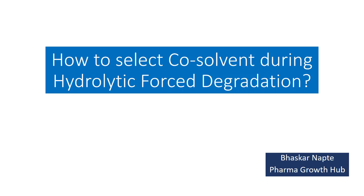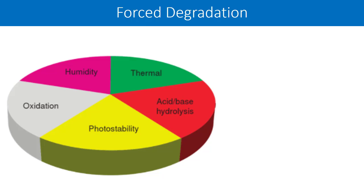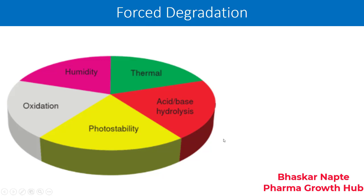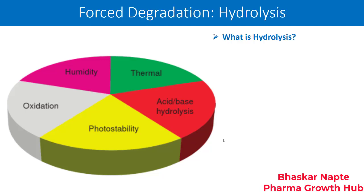My name is Bhaskar Napthi and today we are going to discuss how to select a suitable co-solvent during hydrolytic forced degradation. The general categories of forced degradation are: humidity degradation, thermal, acid-base hydrolysis, photo stability, and oxidation. Our focus is going to be on acid-base hydrolysis, or hydrolytic degradation.